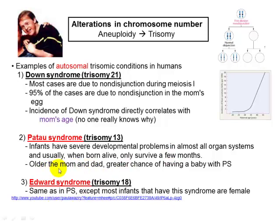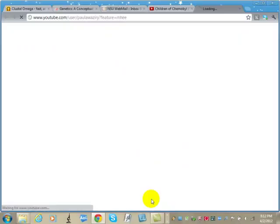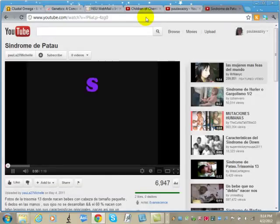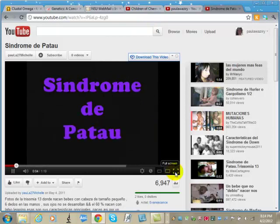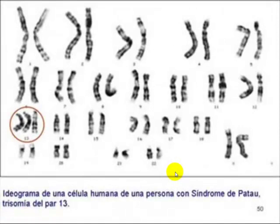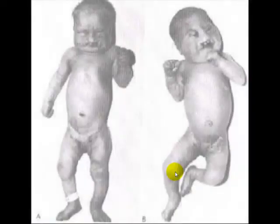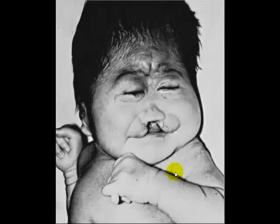Here, both parents being at an older age increases the chances of having a baby with Patau syndrome. The same would happen for Edward syndrome — trisomy 18 — where the chromosome is a little bit smaller than chromosome 13, but the phenotypes are the same. A video is shown here of a child with Patau syndrome — it's in Portuguese, but the images are more important. This shows trisomy 13, and most of these children do not survive. They have very severe phenotypes.